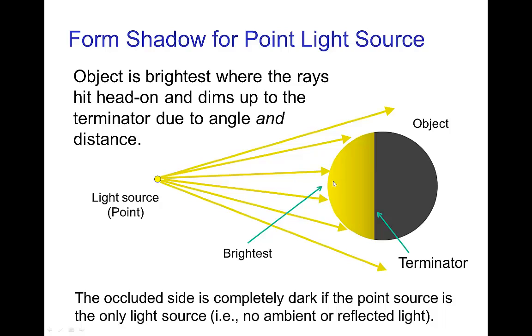And for a sphere, that's also the closest point to the light source. And then as we move around the sphere, we have both increasing distance and increasing angle until we reach the terminator and then it's black behind it.